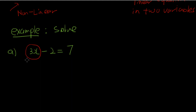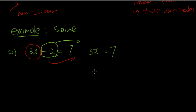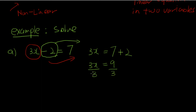What I mean by isolate is: leave this term only and move everything else to the other side. How do we get rid of this negative 2? You can think of adding 2 on both sides, but what I usually do is simply move this across the equal sign. Whenever we move a term across the equal sign, the sign changes. So this used to be negative 2, now it becomes positive 2. Simplifying, we get 3x equal 9, then divide both sides by 3. Cancel to get x equal 3.